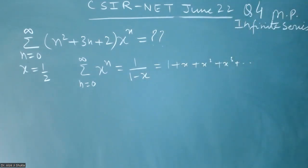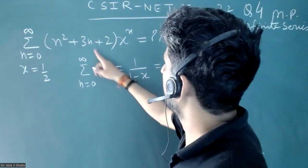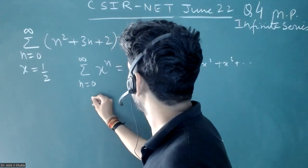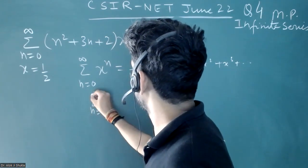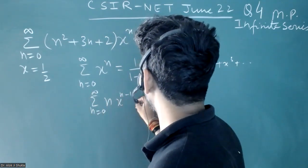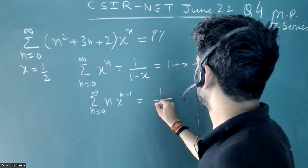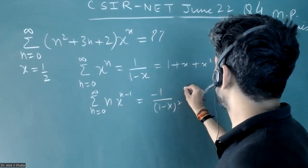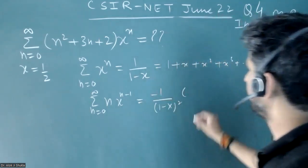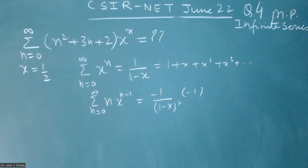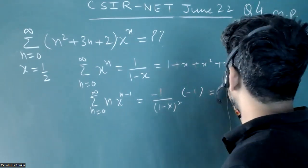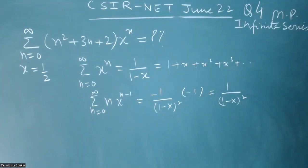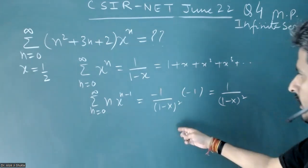Now if I want to write n·xⁿ, we will take the derivative. It will become summation n equal to zero to infinity of n·x^(n-1), and its derivative of 1/(1-x) will become 1/(1-x)².